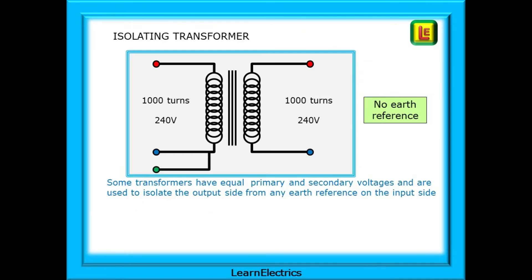And we can have a transformer with the same number of turns on each side. Shown here is 240 volts in and 240 volts out. This would be typical of a bathroom shaver socket where we still want 240 volts output but we want to separate the secondary side from any earth reference thereby reducing the shock risk.